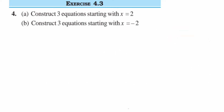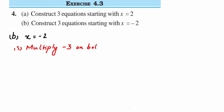Here we have x = -2. For the first equation, I'm going to multiply by a negative number to make it more interesting — I'll choose -3. Multiplying both sides by -3, we get -3x = (-2) × (-3) = 6. So -3x = 6 is my first equation.